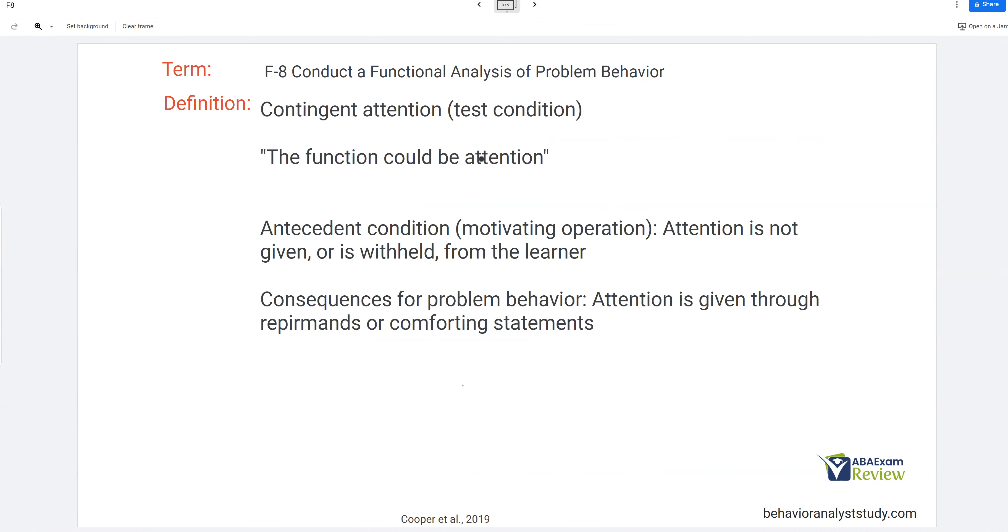So let's start with contingent attention, potentially maybe the most common function. And you'll see I put in quotes, the function could be attention. This is to try to make this simple for you. When you're using an FA, you're testing your hypothesis you've got from your indirect and descriptive assessments. So our hypothesis is the function could be attention. Now in a full FA, we're going to test for every condition. But as you may know, given our constraints on time and resources, we may only be able to test a few conditions. So let's say we think it's attention. What are we going to do?